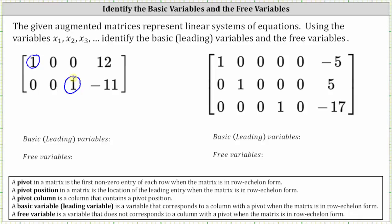Now we have the information we need to identify the basic variables as well as the free variables. A basic variable or leading variable is a variable that corresponds to a column with a pivot when the matrix is in row echelon form. Column one is the X sub one column, column two is the X sub two column, and column three is the X sub three column. The fourth column is the constant column. Because the pivot columns are column one and column three, X sub one and X sub three are the basic or leading variables. A free variable is a variable that does not correspond to a column with a pivot when the matrix is in row echelon form, and therefore X sub two is a free variable.